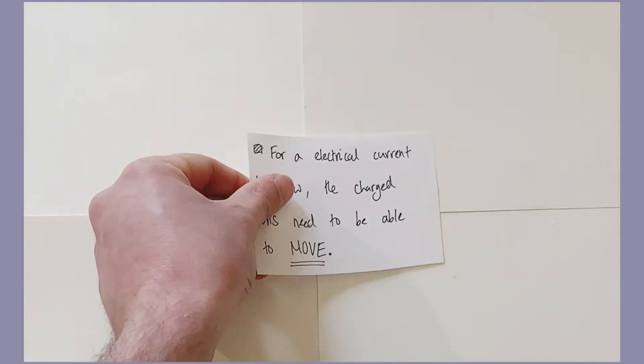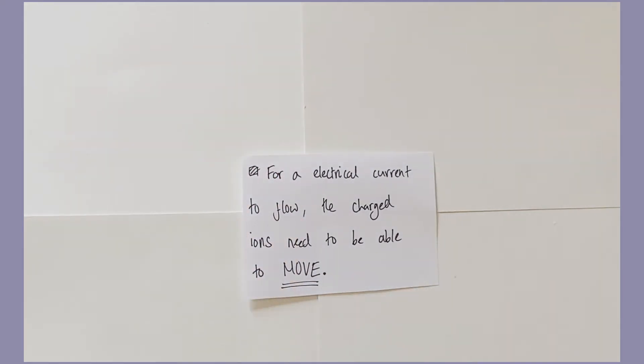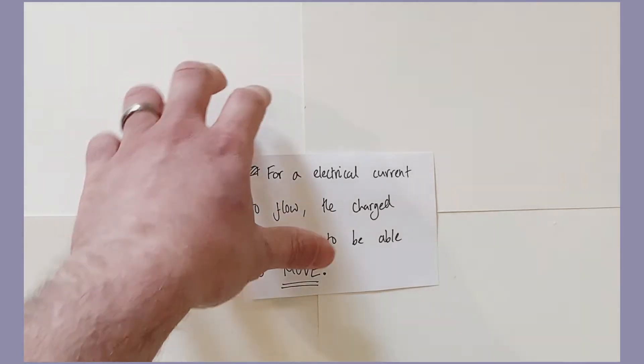Now the second property I want to look at is the conductivity of giant ion structures. And it turns out that they do not conduct electricity when they are solid. And that should make sense because for an electrical current to flow, you need the charged particles to be able to move. So for an electrical current to flow in ionic compounds, you need the ions, these electrically charged particles to be free to move to conduct the current.